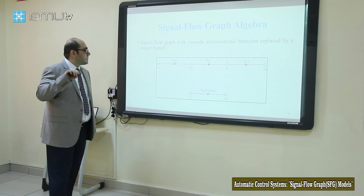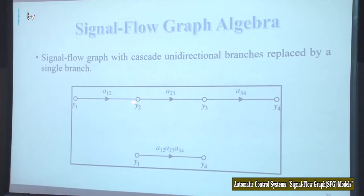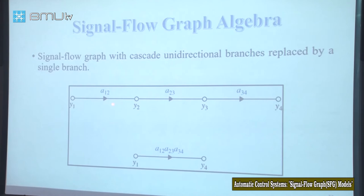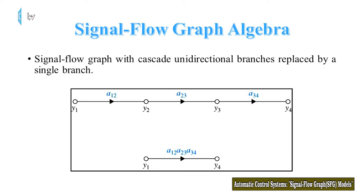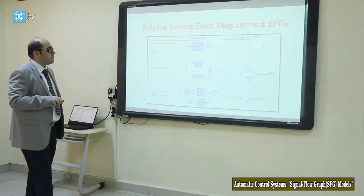If we have branches connected in cascade form, we can again draw one branch and multiply the gain values of each branch together: a12 × a23 × a34. That is the gain of these three cascaded branches.